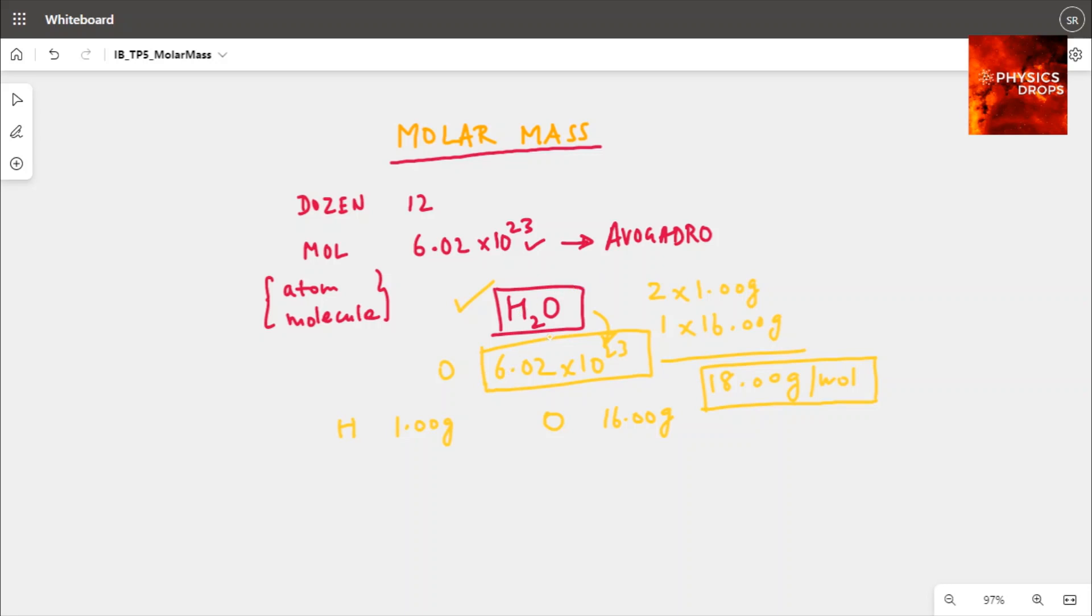So that is why, and we know their masses already of the atoms, we simply add them and multiply them accordingly to get the molar mass of a particular molecule.